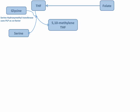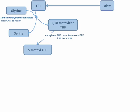5,10-methylene tetrahydrofolate is also useful in the nucleic acid synthesis cycle, which is important for DNA and RNA construction. But in the homocysteine methionine cycle, it needs to be rearranged again by the enzyme methylene tetrahydrofolate reductase and an FAD into 5-methyltetrahydrofolate.